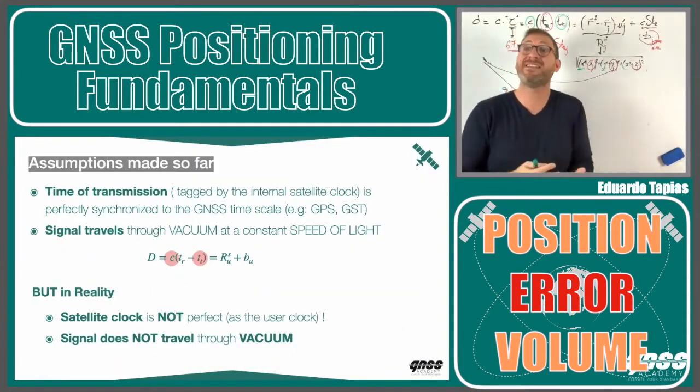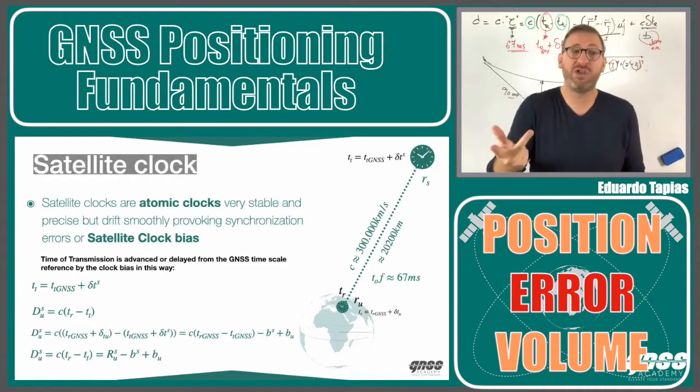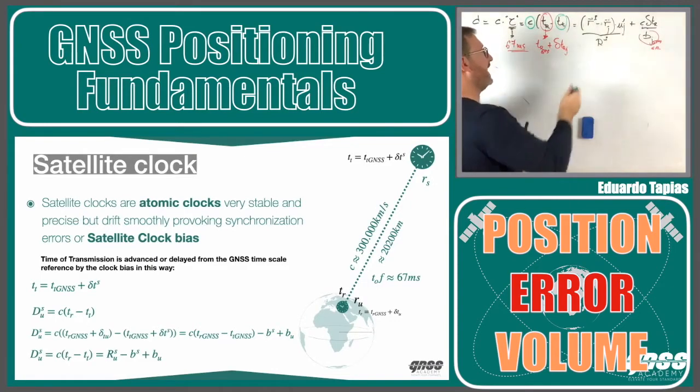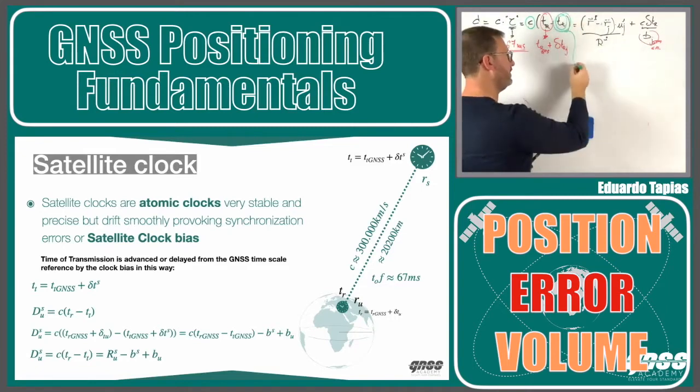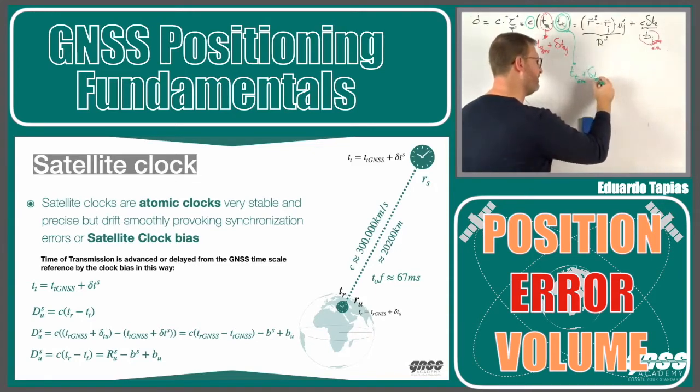The satellite clock, even if it's an atomic clock, is also desynchronized with regards to the GPS time scale. We need somehow to add in the equation the clock bias of the satellites. This time of transmission will be the time of transmission in GPS time scale, plus a delta of the time of transmission in GPS time scale.